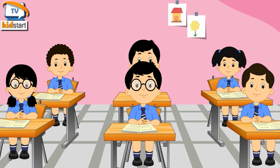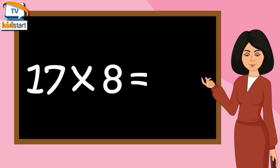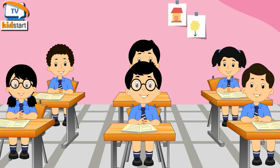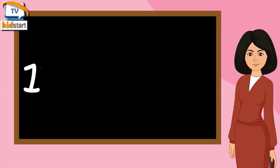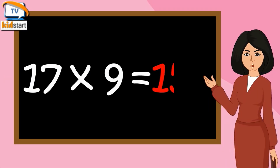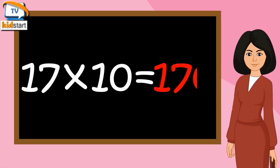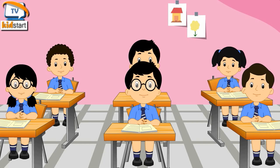Seventeen sevens are one hundred nineteen. Seventeen eights are one hundred thirty-six. Seventeen nines are one hundred fifty-three. Seventeen tens are one hundred seventy.